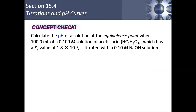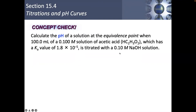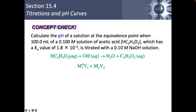Now let's look at the equivalence point — this is where everybody gets lost. Calculate the pH at the equivalence point for 100 mL of 0.1 M acetic acid (Ka = 1.8 × 10⁻⁵) titrated with 0.1 M NaOH. It doesn't tell me how much to add, so I use the dilution formula M₁V₁ = M₂V₂. With the same concentration, 0.1 × 100 = 0.1 × V₂, so V₂ = 100 mL of NaOH.